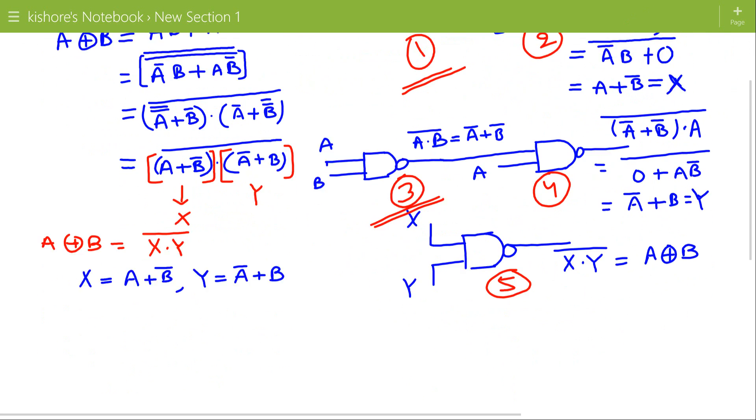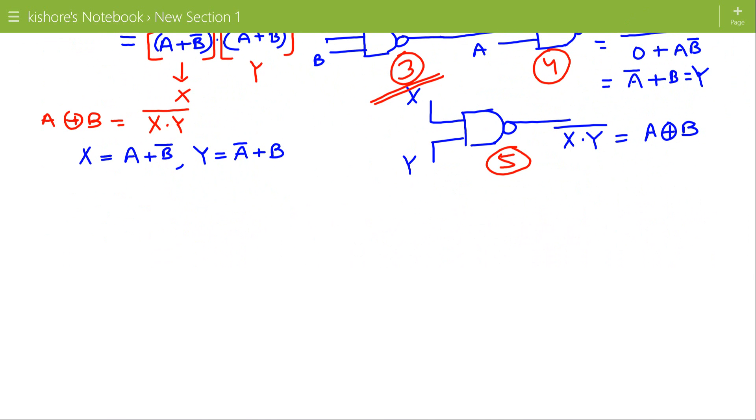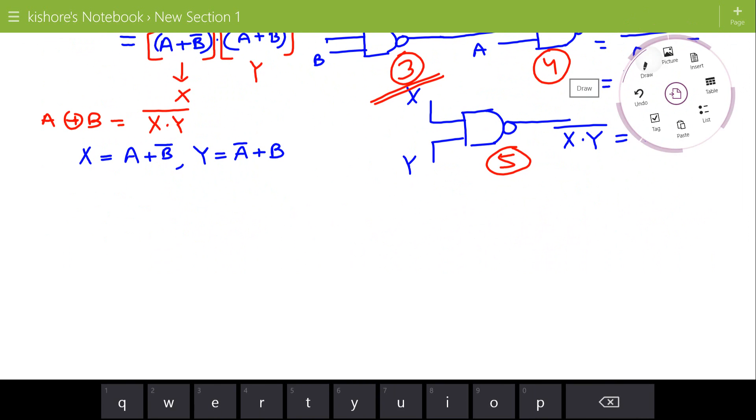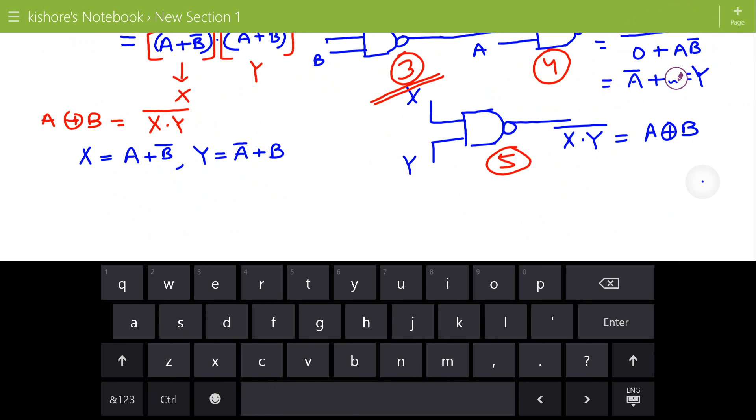And the resulting circuit will be A and B. This is A NAND B.